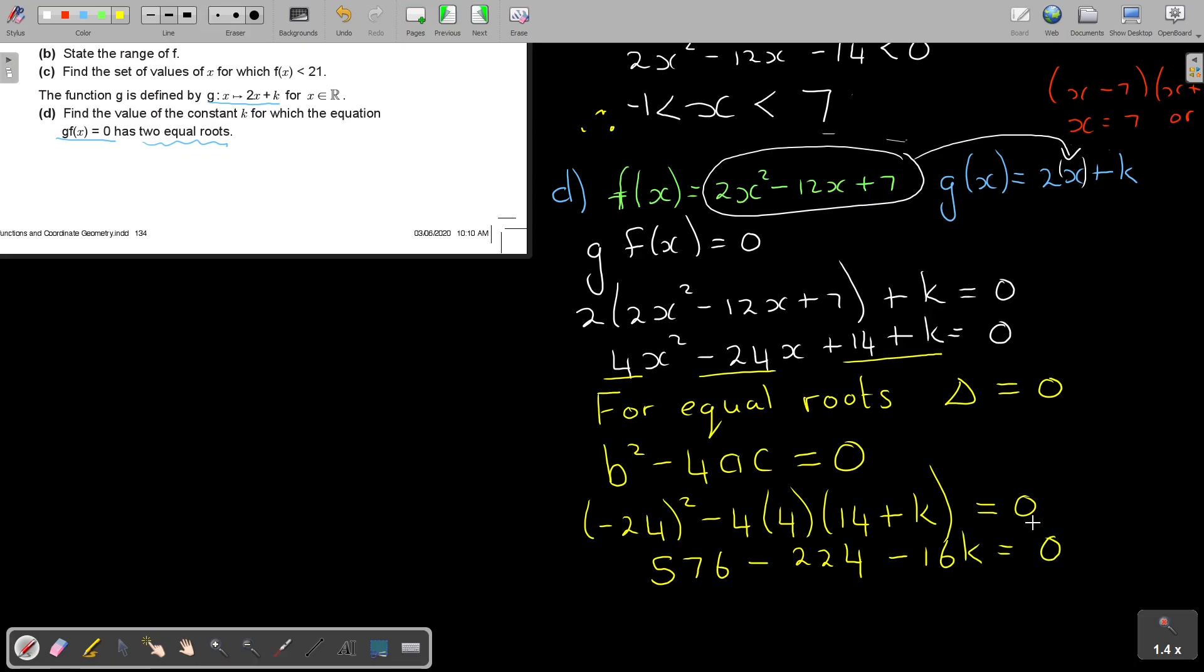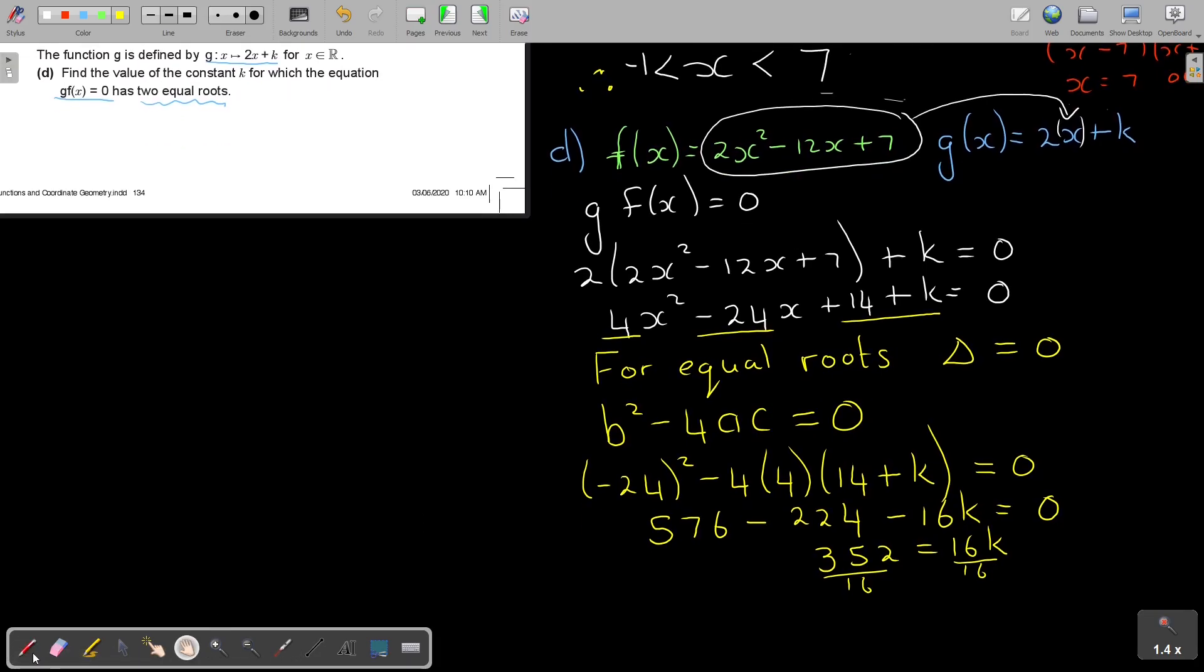576 minus 224 is 352. Take the 16 over, divide both sides by 16. Therefore, the value of k is equal to 22, and that's how you do it.